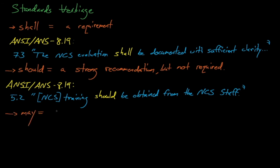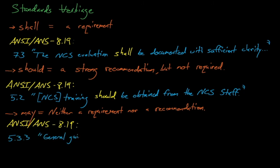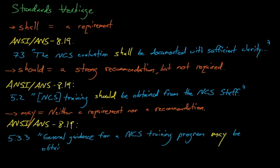Lastly, the verb 'may' denotes permission for some action. 'May' statements are neither requirements nor recommendations — they are completely optional, and licensees have the freedom to choose to follow or ignore them. In ANSI-ANS 8.19, article 5.3.3 states that general guidance for a nuclear criticality safety training program may be obtained from ANSI-ANS 8.20. The 8.19 standard describes administrative practices for nuclear criticality safety, and the 8.20 standard describes nuclear criticality safety training. By using a 'may' statement here, 8.19 suggests using 8.20 as a guide, but does not mandate it, because mandating it would tie the two standards together when in reality the licensee should work with their regulator for developing a criticality safety training program. Again, the standards tell you what you need to do, but not how to do it.